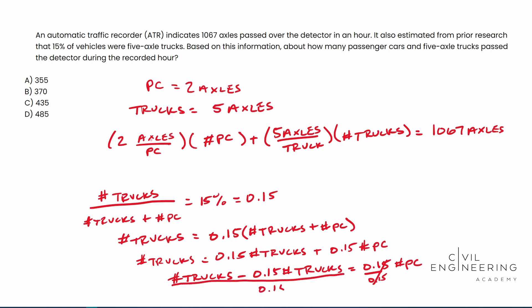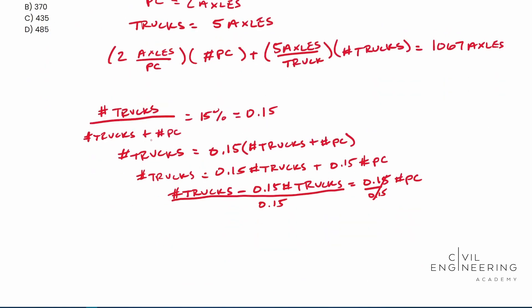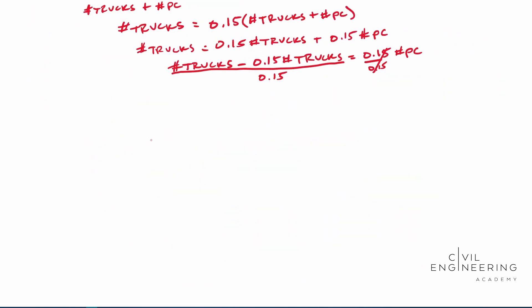And so if I was to simplify this, you actually end up with something that looks like this: 5.667 times the number of trucks is equal to the number of passenger cars. So basically for every truck, we have 5.667 passenger cars.